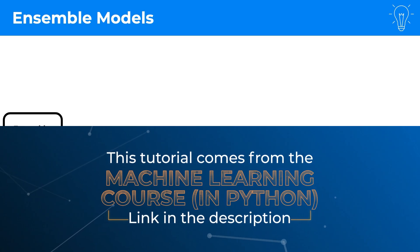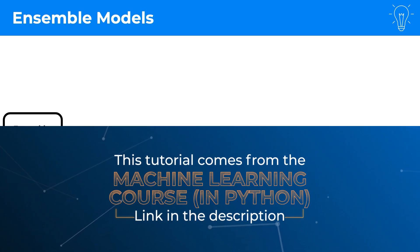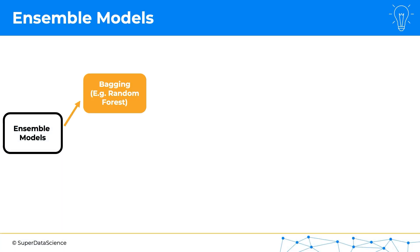The whole general category of ensemble models has two subcategories. The first one is bagging, for example random forest. And by the way, here's a fact for your trivia night or something to talk about at work. Bagging actually comes from bootstrap aggregating.